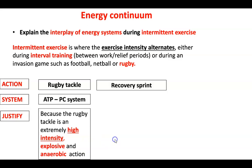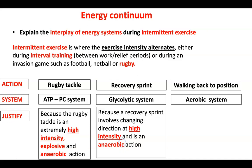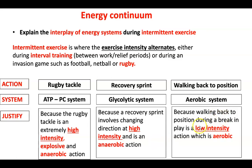For the glycolytic system, a recovery sprint in rugby would be the example. A recovery sprint involves changing direction at high intensity as an anaerobic action, and it could take longer than 10 seconds — for instance, running the length of the pitch after making a tackle. For the aerobic system, walking back into position during a break in play is low intensity, aerobic, and involves deep breathing and gaseous exchange, allowing oxygen to reach the muscles and resynthesize ATP.